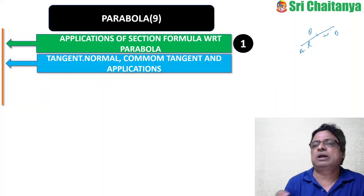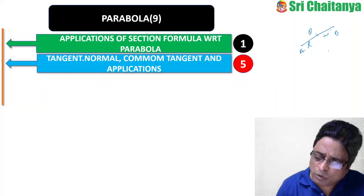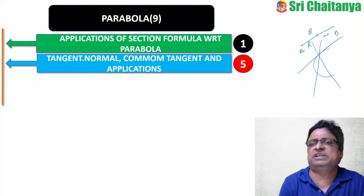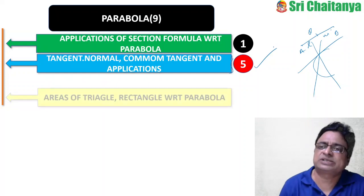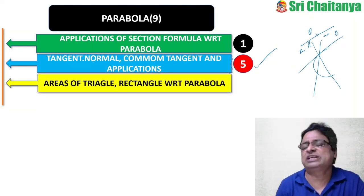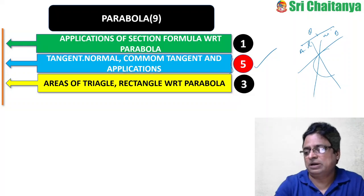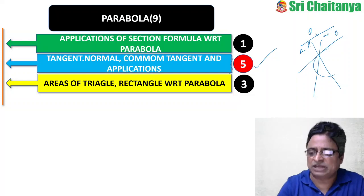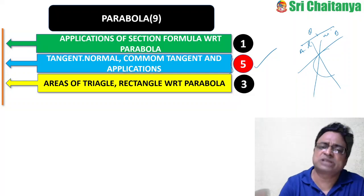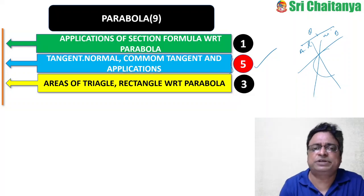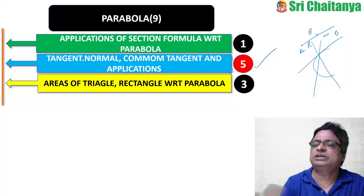The second parabola subtopic — tangent, normal, chord of contact, and common tangents — is the most important area with 5 questions asked. This includes common tangents to parabola and circle, and chord with respect to midpoint. The third subtopic: area of the triangle and rectangle with respect to the parabola — 3 questions. This covers maximum and minimum area of figures inscribed in the parabola.